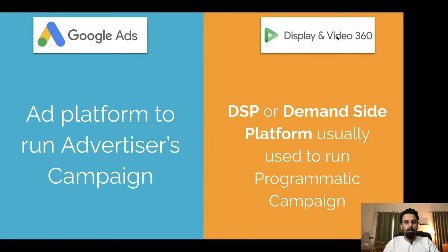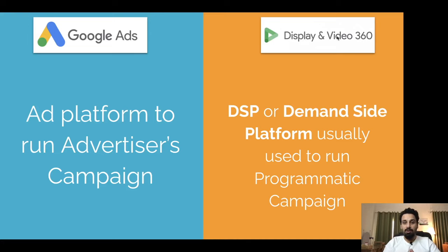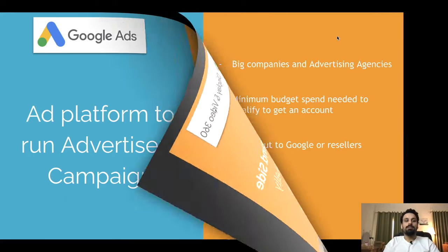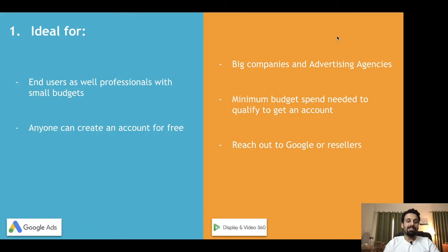Google Ads is a platform which advertisers use to create different kinds of campaigns and show ads on Google Search, other websites, apps, YouTube, and even Gmail. However, Display and Video 360 is a much more advanced option and is also a Google product, which gives you a lot of control in terms of how you buy inventory.